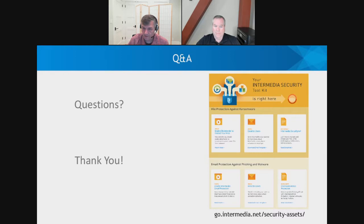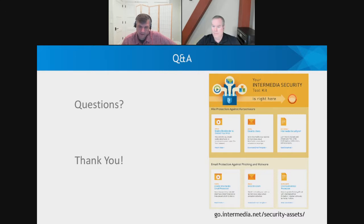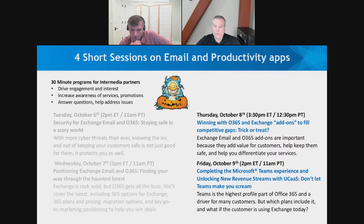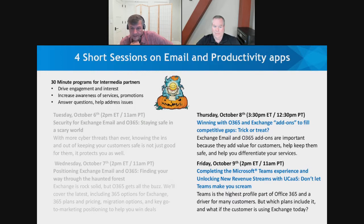We have just a couple of minutes, so if you have questions please put them in the Q&A and we'll follow up. We're also really interested in feedback on the sessions. If there's another topic that would be useful for us to cover, please let us know. Tomorrow's session is going to be about the add-ons for 365 and Exchange — we'll talk about archiving, secure sync, voice, and how they complement 365 and how to differentiate them. On Friday we're going to come back and talk a lot more about Teams: what it means, how to access it, how to get customers who are on Exchange today to a Teams-enabled environment, and what the Teams and Teams-plus-voice related options are.